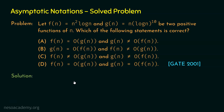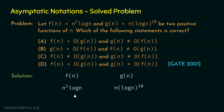Here comes the solution. We know f(n) = n² log n and g(n) = n × (log n)^10. We compare these two functions. Since n is common in both, we can remove n from both. After simplification, f(n) becomes n × log n and g(n) becomes (log n)^10.